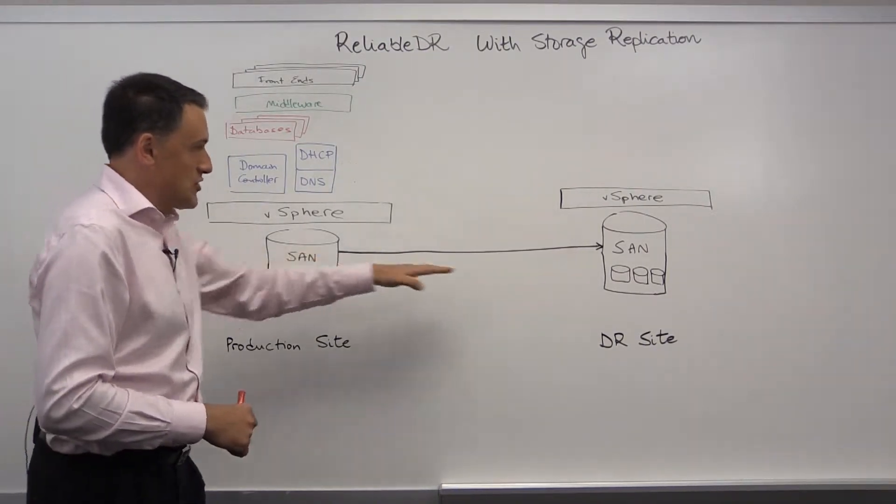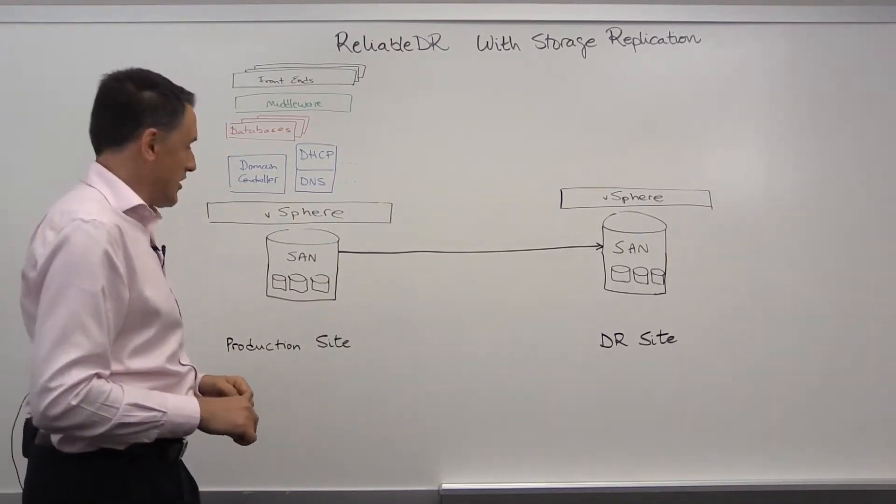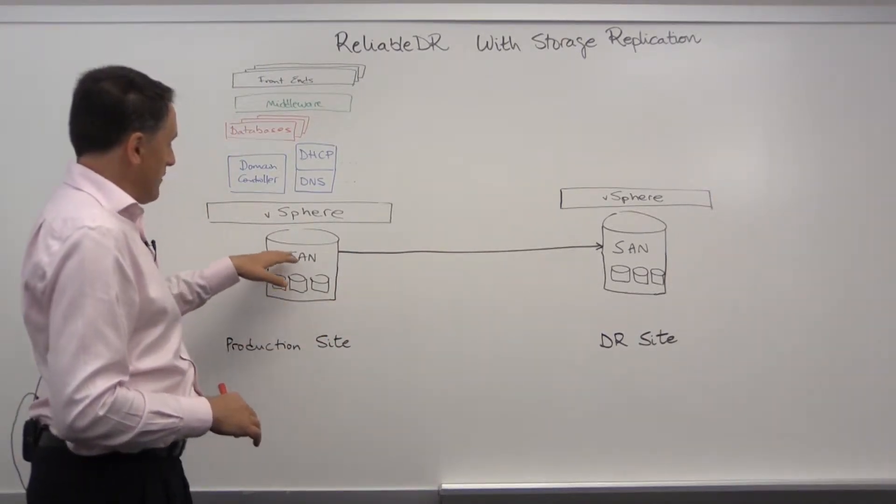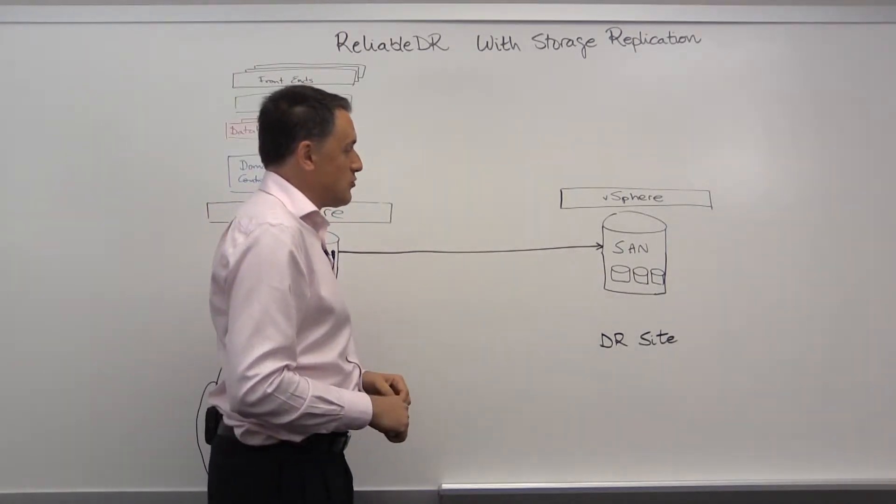And here we have SAN to SAN replication going across the sites. This could be synchronous or asynchronous, it wouldn't matter. The SANs have the different LANs and volumes that are being replicated to the DR site.